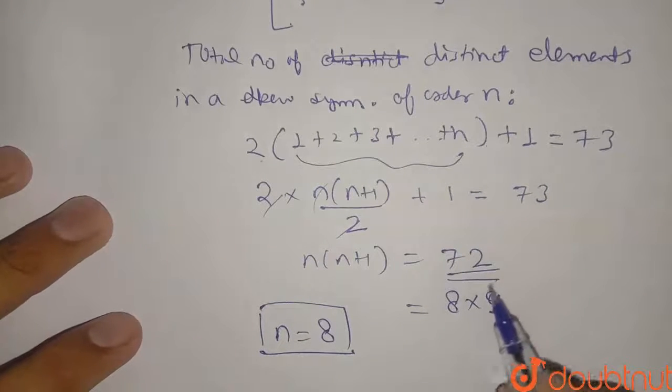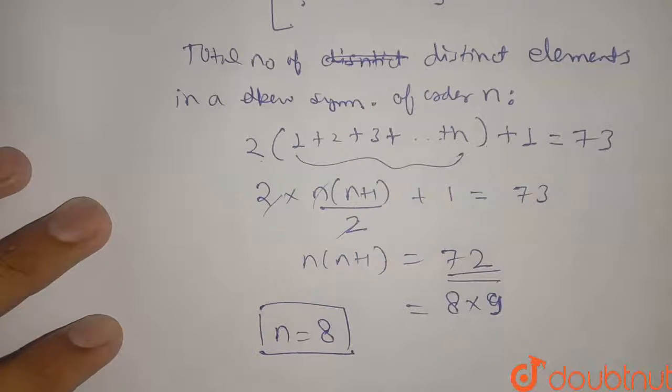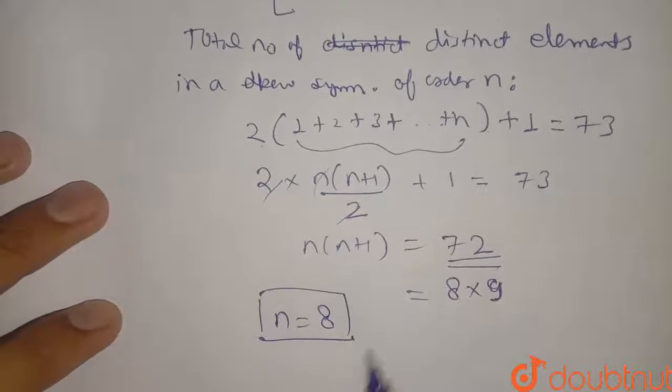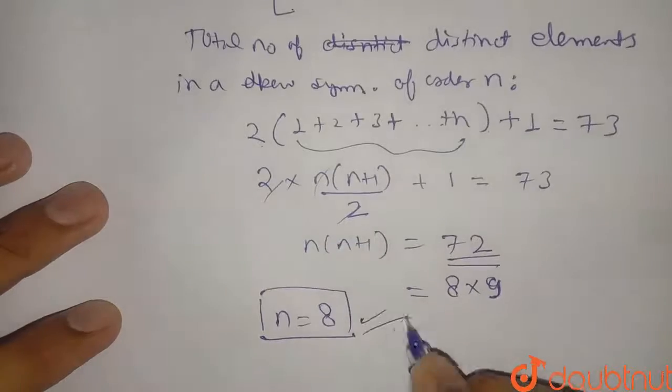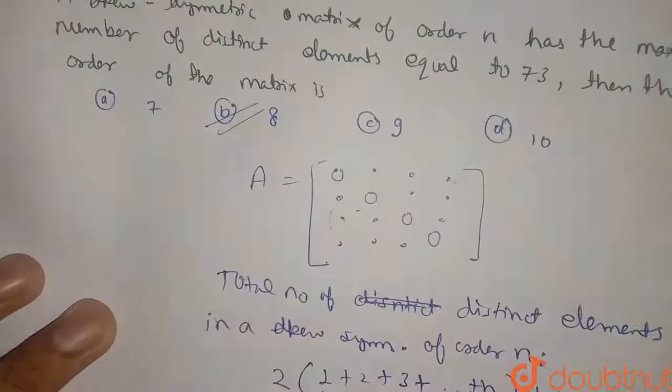From this is our daily routine calculation, so 8 into 9 will be 72. So I can take n is equal to 8. So our order of the matrix will be n is equal to 8. So right option will be B. Thank you.